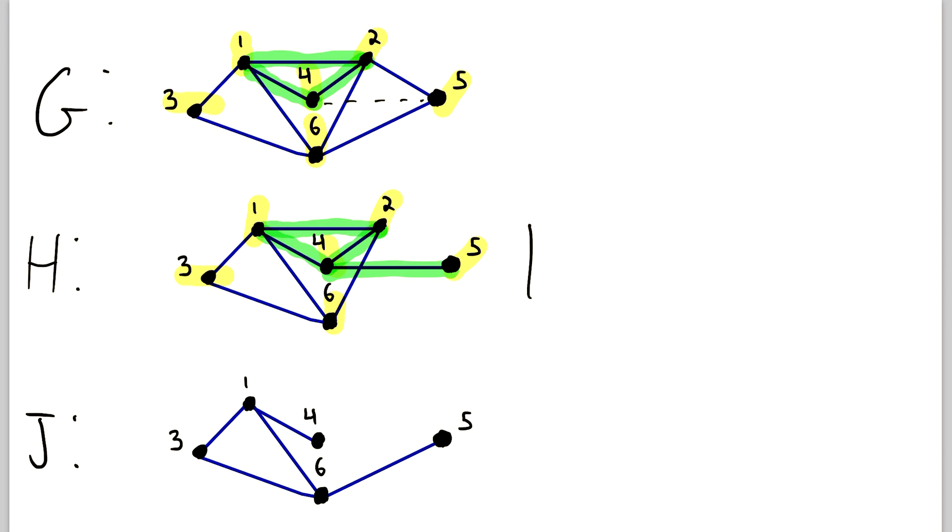Thus, we can conclude that H is not a subgraph of G. Because H contains an edge, the edge that joins 4 and 5, that is not in G. And that's all we need is one thing in H that isn't in G to say that H is not a subgraph of G. So then because one of these two graphs is a subgraph and one isn't, that leads us to conclude that J is a subgraph, but let's take a closer look at it to find out why.